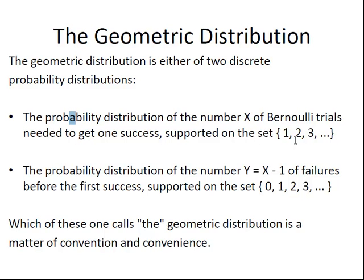The second one is that the probability Y, the number of failures, is to do with the number of failures. So if I get it right on the first attempt, the number of failures before the first success, so if I get it right on the first attempt, the number of failures before I succeeded was 0.